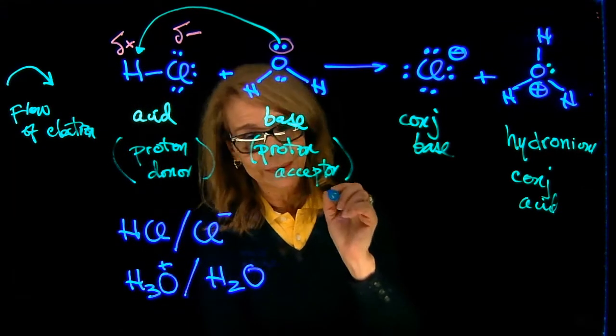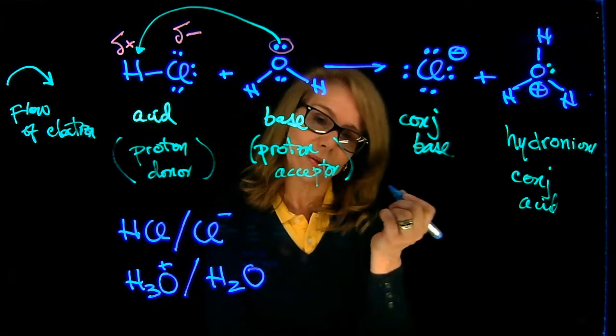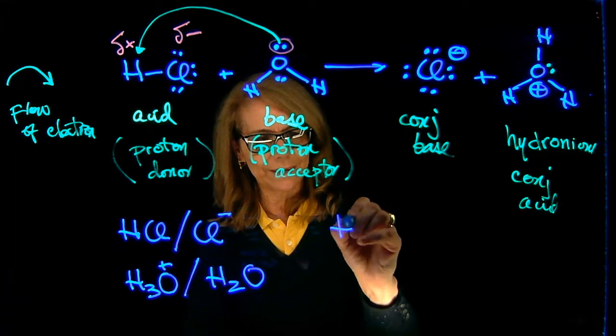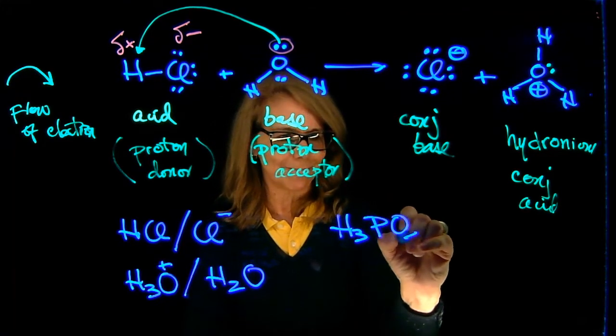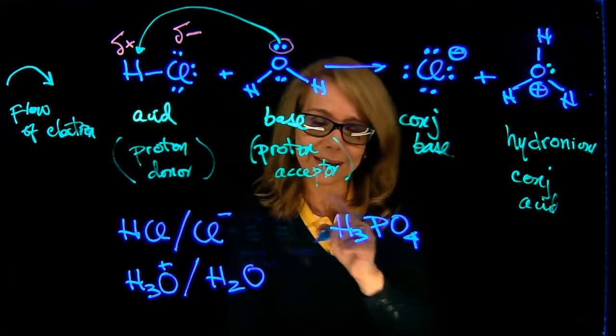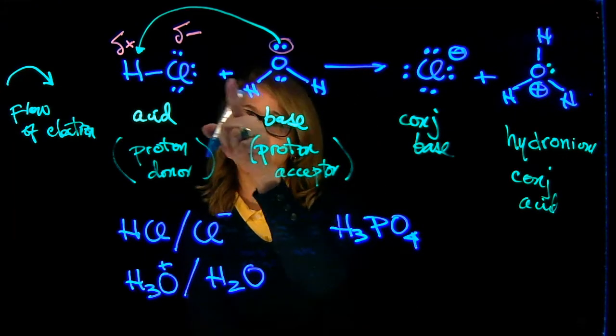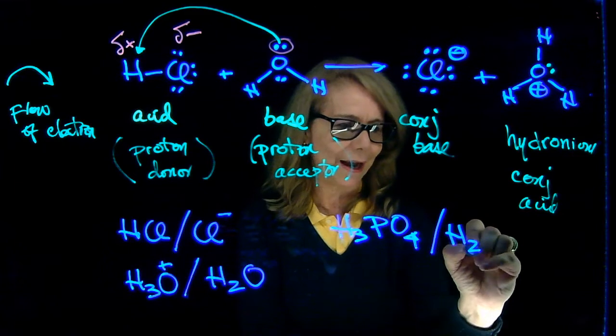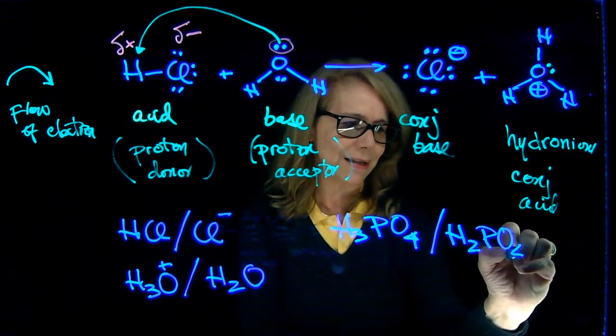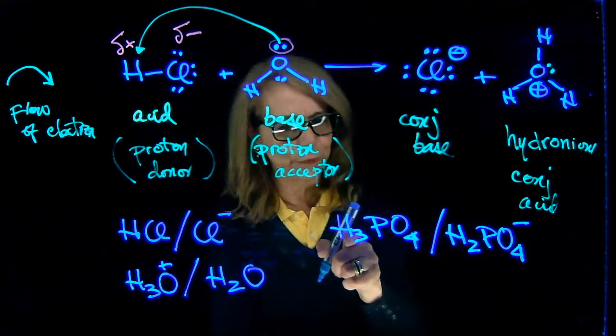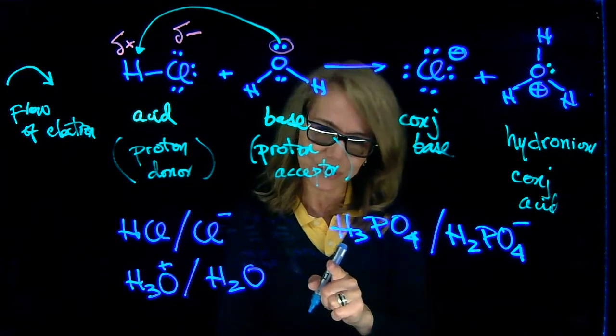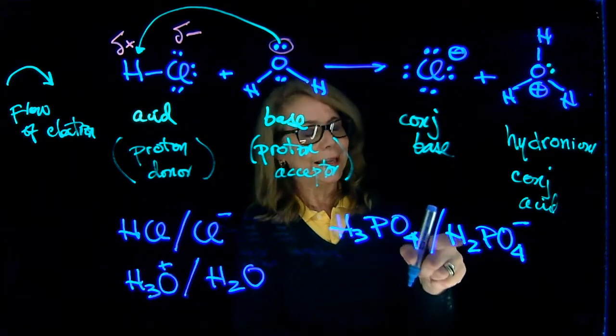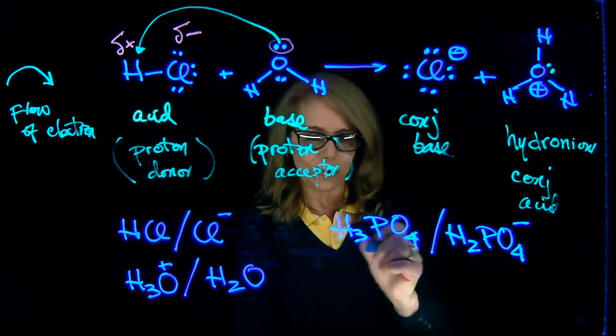That's the case, for example, of phosphoric acid. When phosphoric acid dissociates in water—a reaction similar to that—it will produce dihydrogen phosphate. Notice the difference here is one proton. So that's the acid-conjugate base. But still the dihydrogen phosphate can ionize and give another proton.